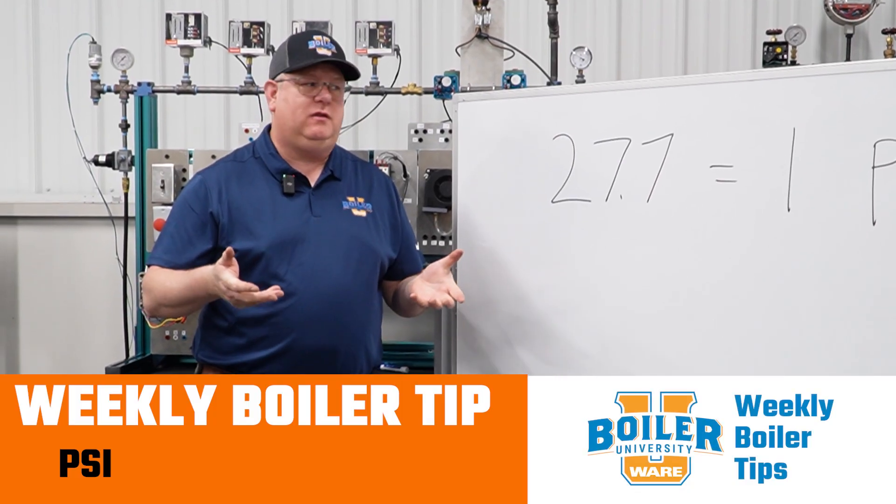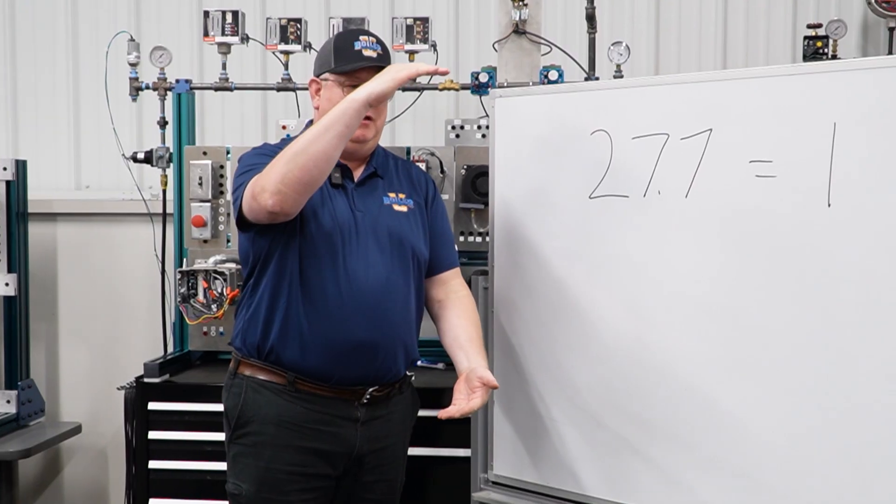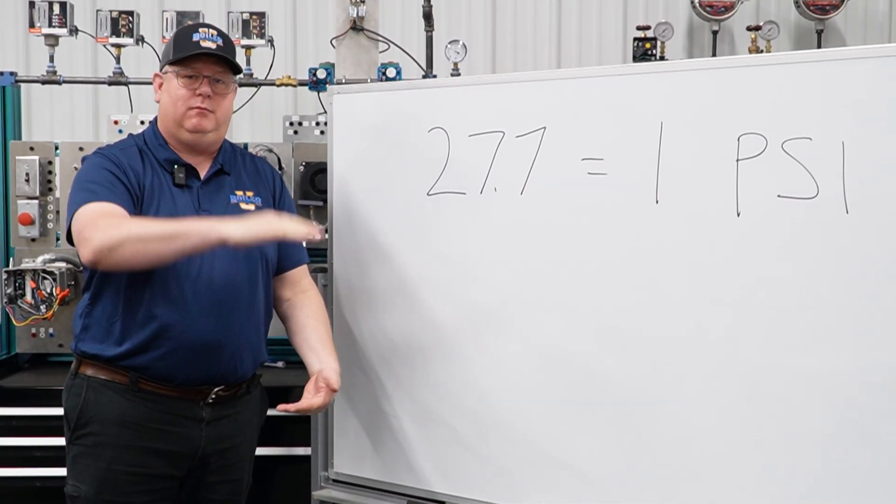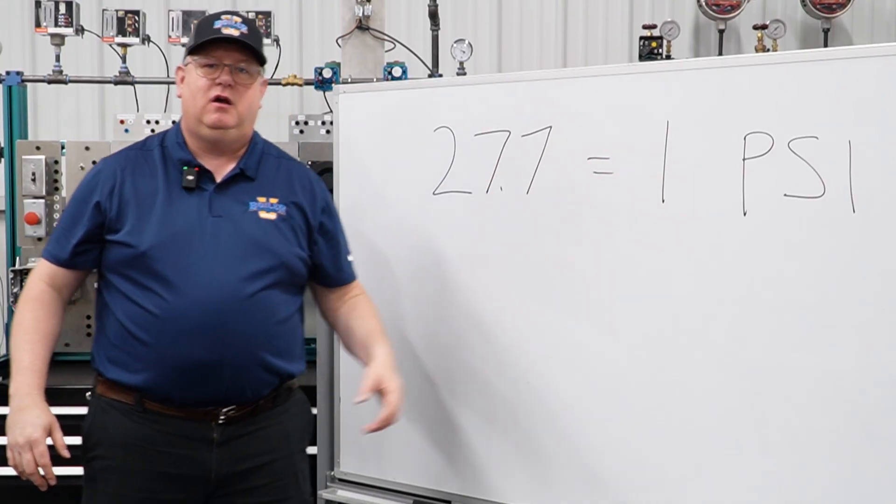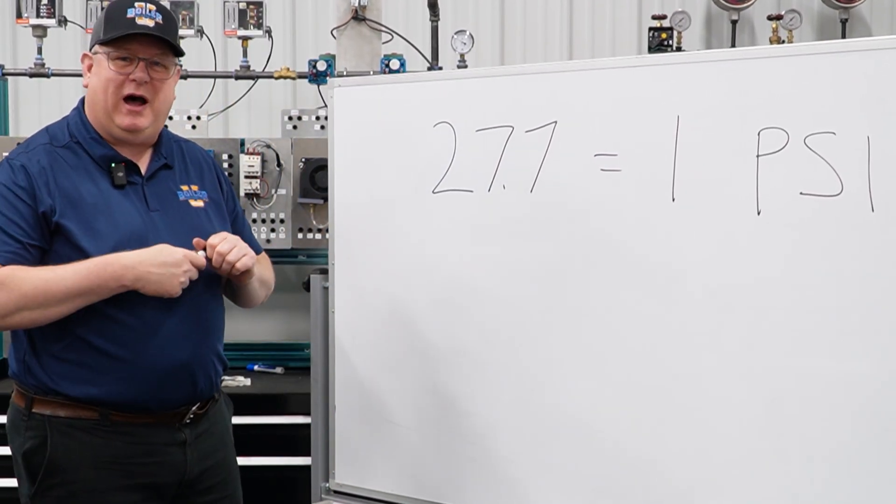The question that we got recently was, if 27.7 or roughly 28 inches of water column equals 1 PSI, doesn't it make a difference what size the pipe is?